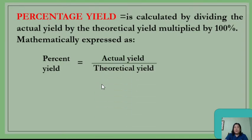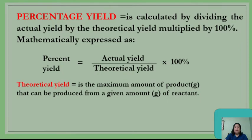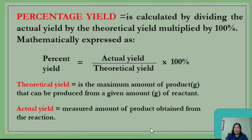What is theoretical yield? Theoretical yield is the maximum amount of products in grams that can be produced from a given amount of reactant. The actual yield is the measured amount of the product obtained from the reaction. In computing for the percentage yield, you have to know first which is which — which is the actual yield and which is the theoretical yield.